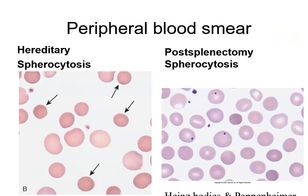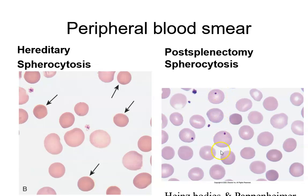On a peripheral blood smear, hereditary spherocytosis will show lots of little spheres — no central pallor, smaller and darker than normal cells. You can also get spherocytosis as a result of a splenectomy. After splenectomy, you may start seeing Howell-Jolly bodies and Pappenheimer bodies because of increased iron residue left in the cells. Heinz bodies — which are denatured hemoglobin — may also be present.